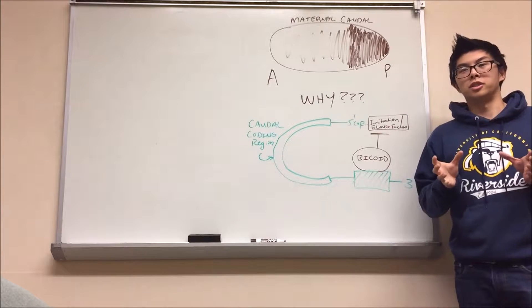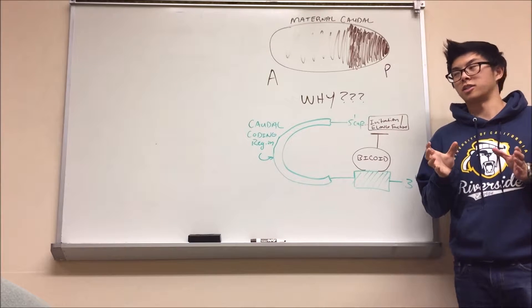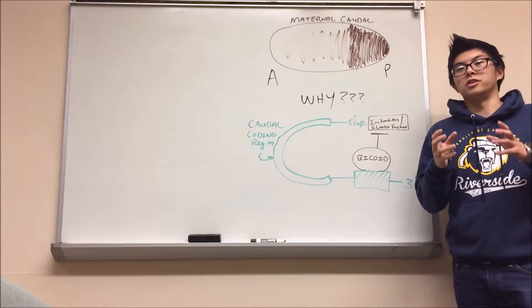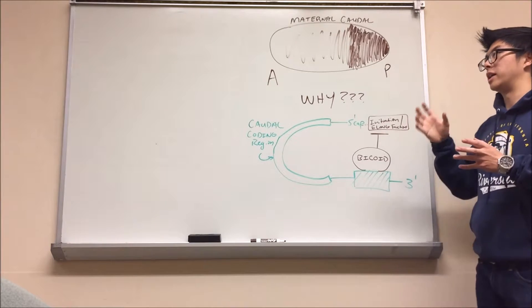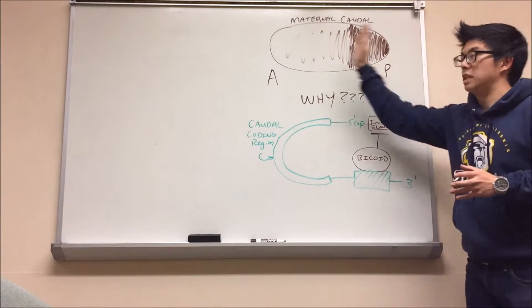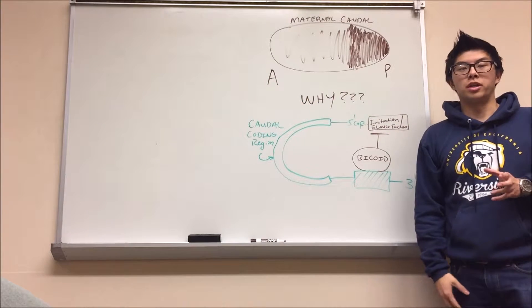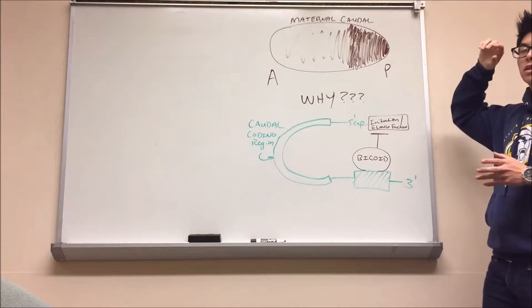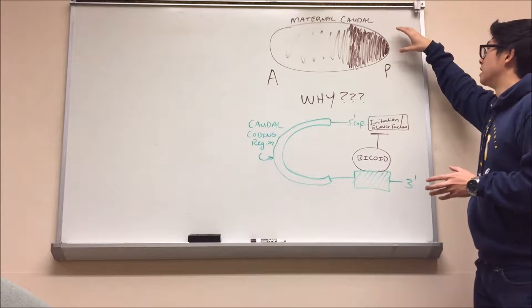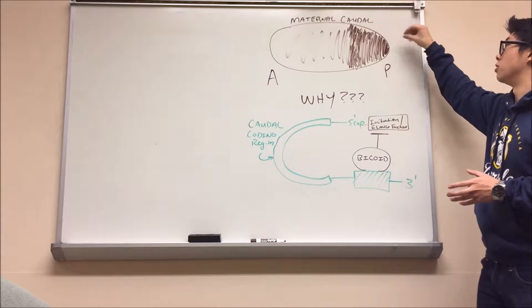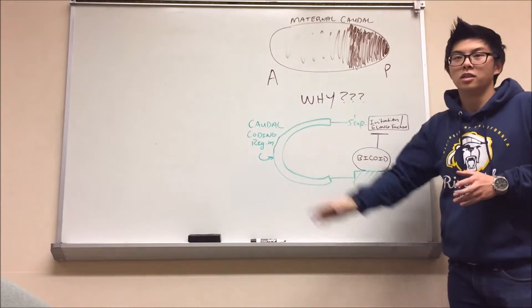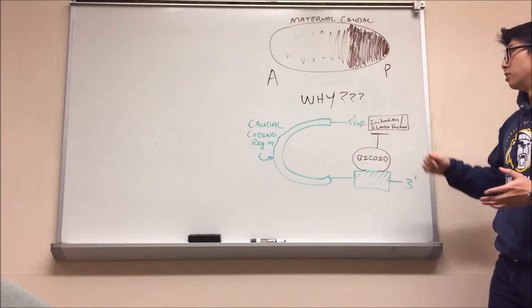There is another maternally expressed gene, known as Caudal in this case, and drawn here. Just like Hunchback, Caudal is also distributed by the mother evenly throughout the whole embryo prior to fertilization. However, again, when you look at its phenotype, you see that Caudal expression is only seen at the posterior end in a gradient. So why is that the case?